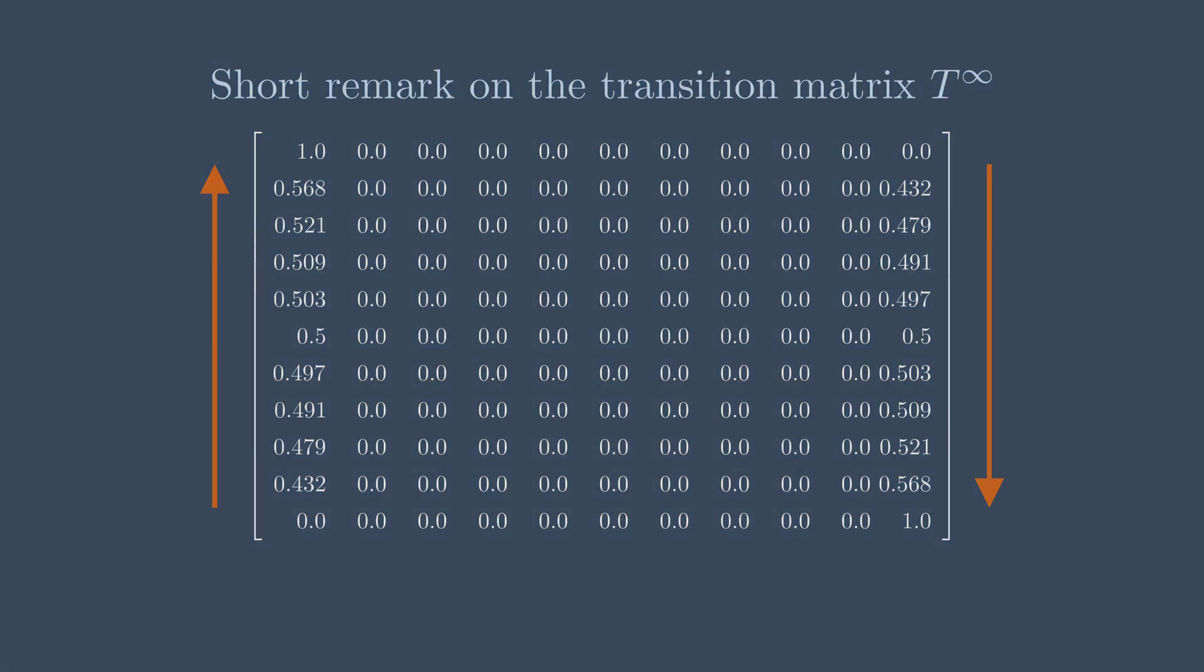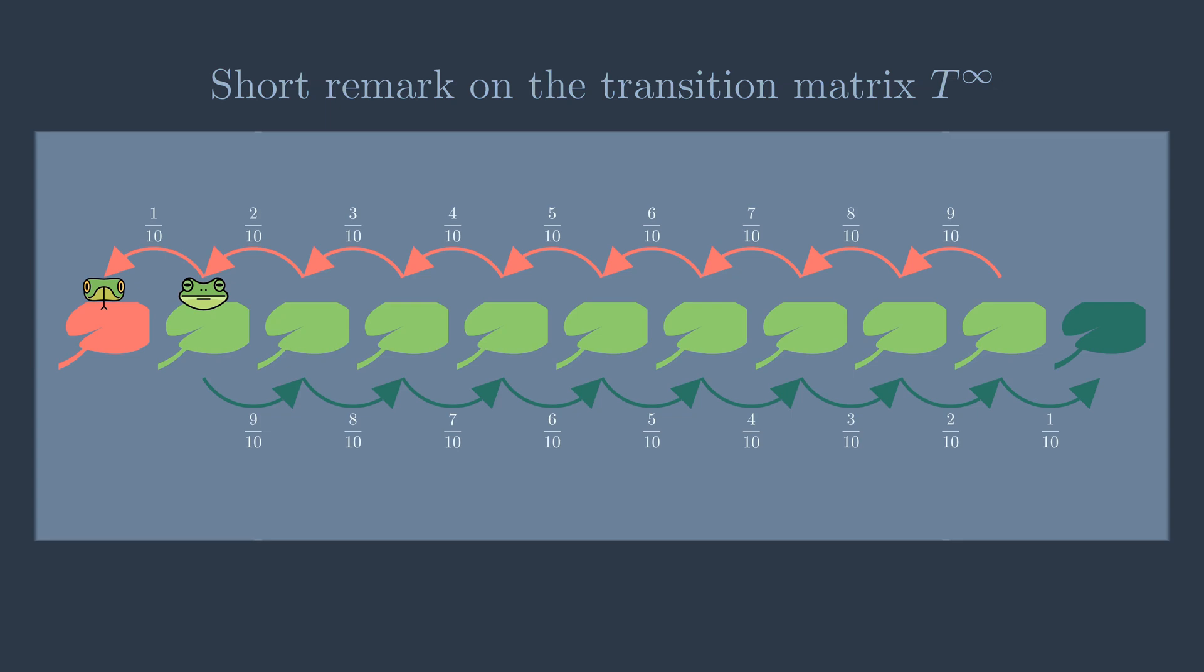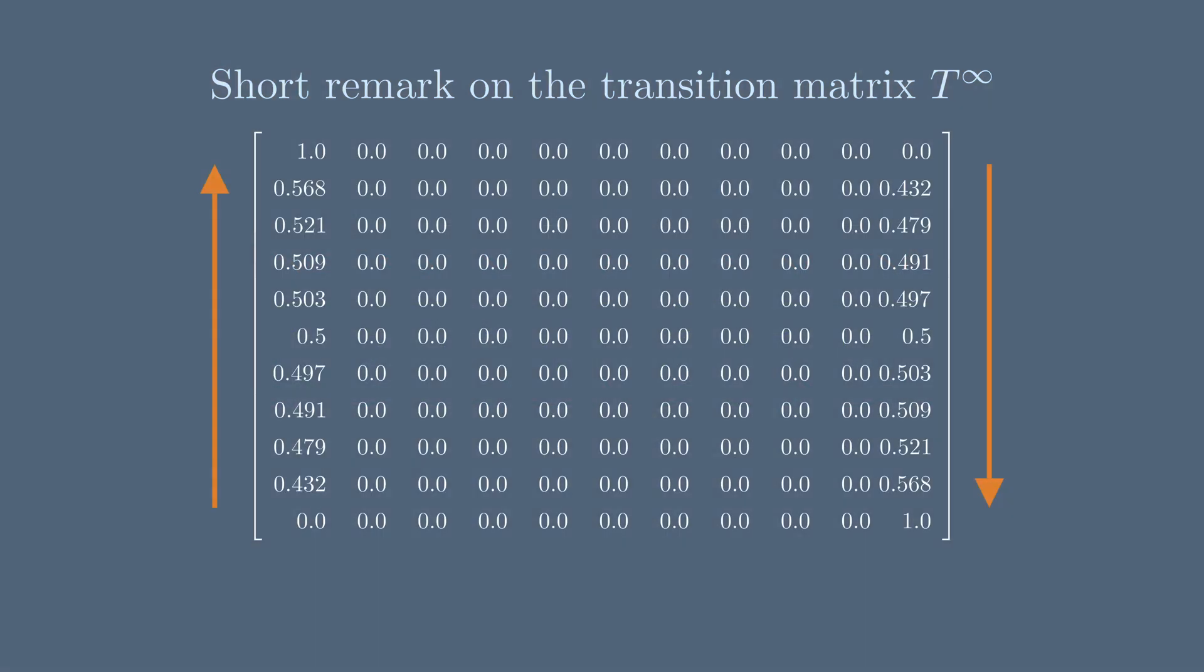The last observation is that even if the frog starts with only one pad away from the snake, it still has a chance of more than 40% to escape. This agrees with our intuition as well because we do have a tendency to drag the frog to the central pads.